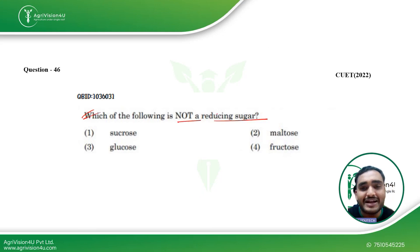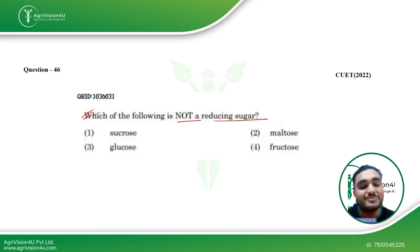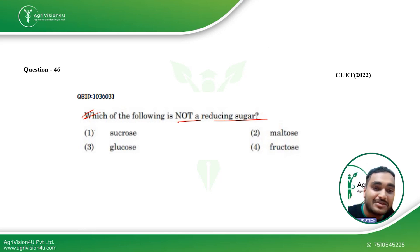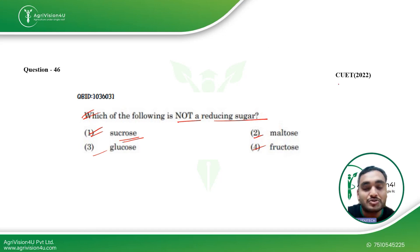Coming to the next question: which of the following is not a reducing sugar? When discussing sugars, remember — sucrose is a non-reducing sugar. Just remember that name: sucrose, non-reducing sugar. This will help in many questions. Sucrose is directly the answer here. Maltose, fructose, and glucose are all reducing sugars. This question was asked in CVT 2022.